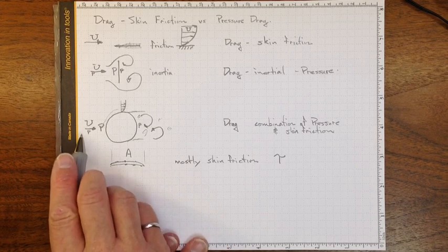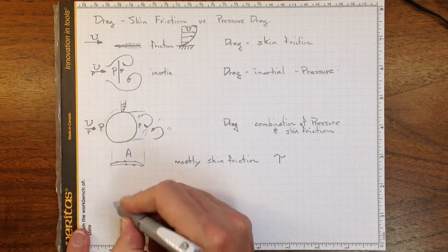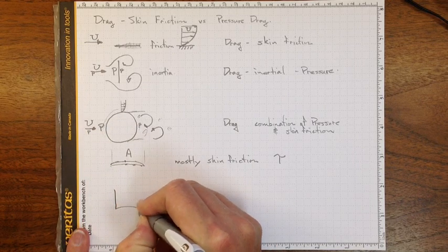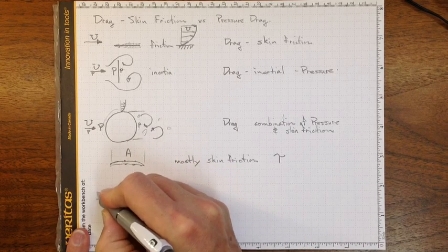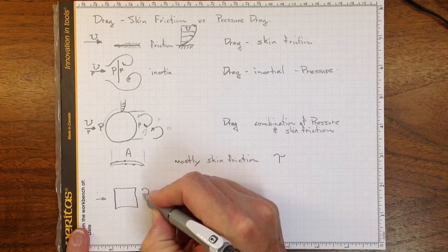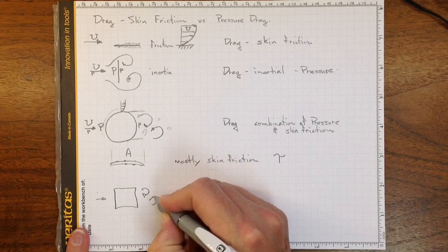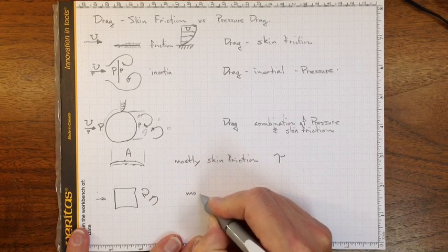On the other hand, if it's something like this sphere or cube sitting out in the flow, the flow is coming this way, there will be a significant recirculation zone back in here. It's mostly pressure drag,